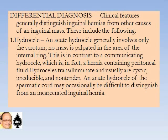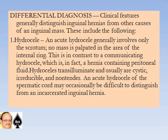Differential diagnosis: clinical features generally distinguish inguinal hernia from other causes of an inguinal mass. Hydrocele: an acute hydrocele generally involves only the scrotum with no mass palpable at the area of the internal ring, in contrast to a communicating hydrocele which is in fact a hernia containing peritoneal fluid. Hydroceles transilluminate, are usually cystic, irreducible, and non-tender. An acute hydrocele of the spermatic cord may occasionally be difficult to distinguish from an incarcerated inguinal hernia.